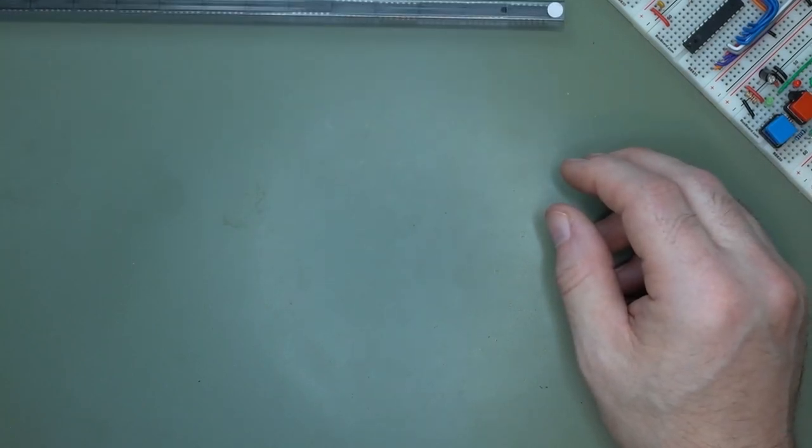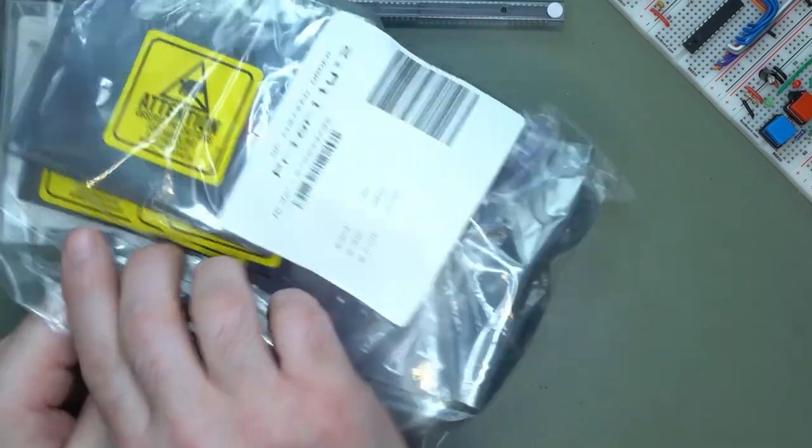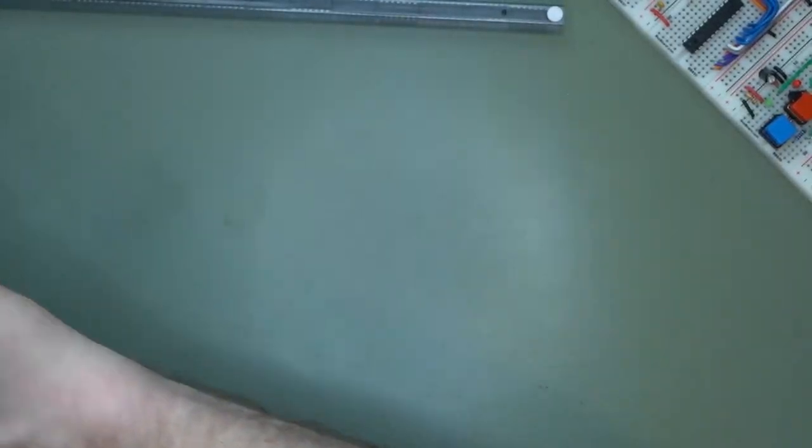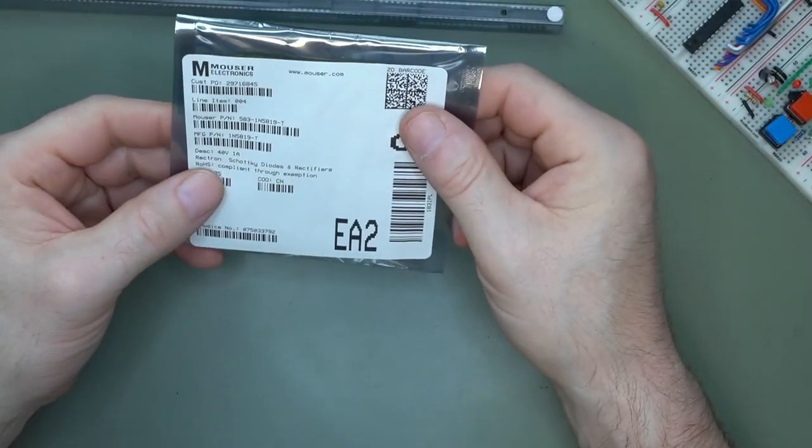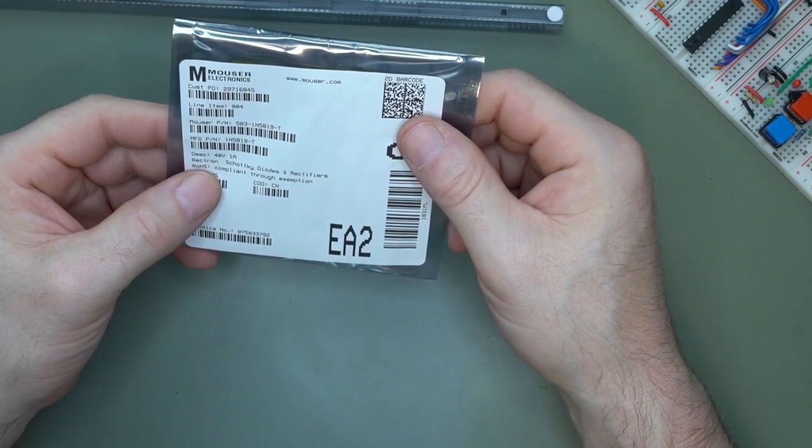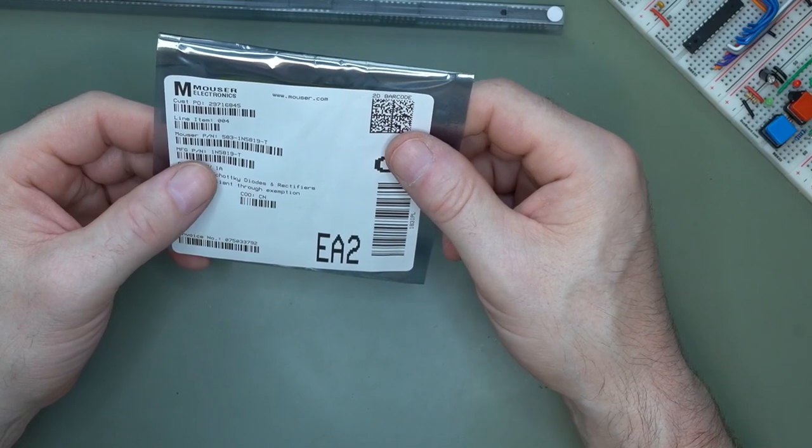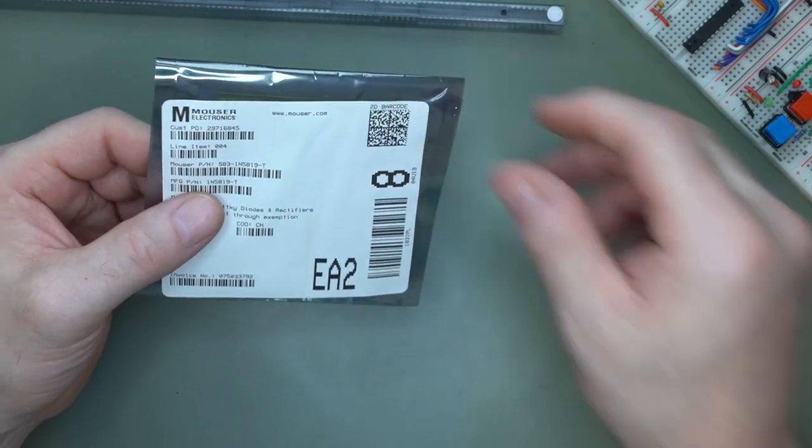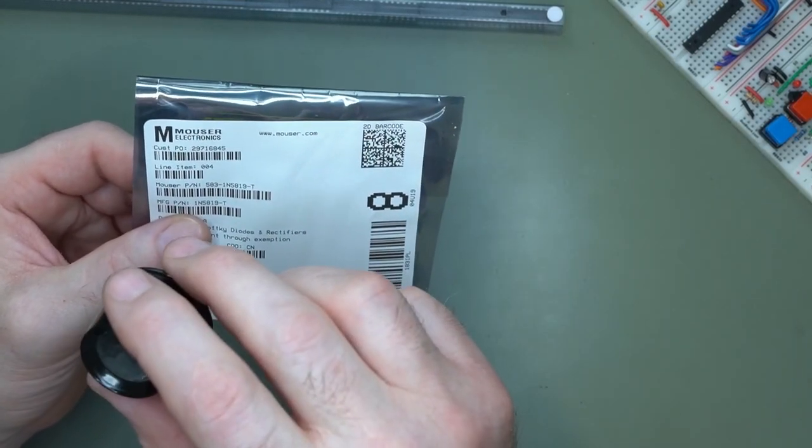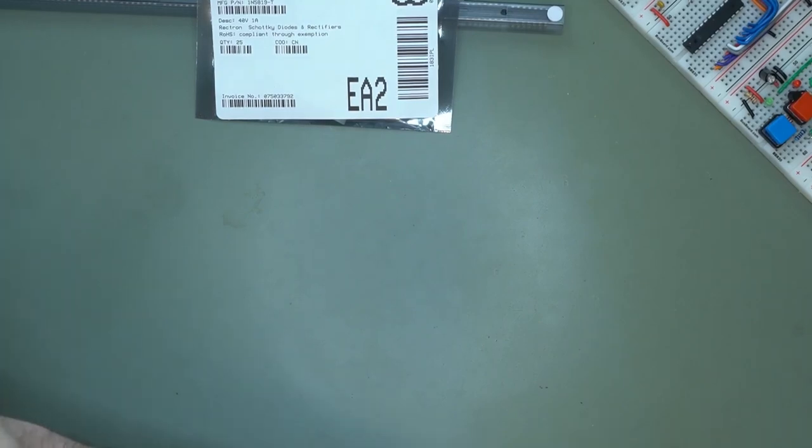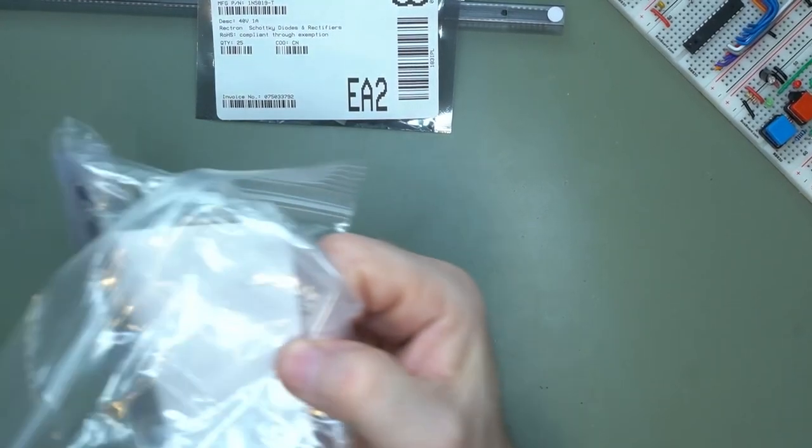And in the bag, what do I have? I have Schottky diodes, rectifiers, part number 185819s. What else in there?